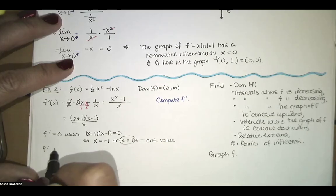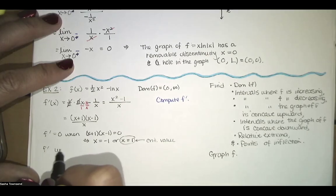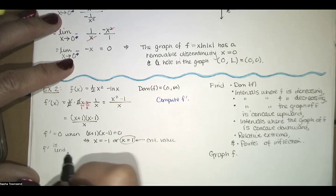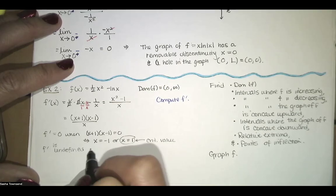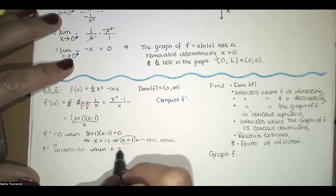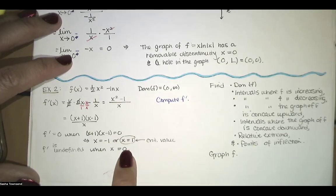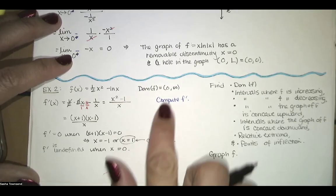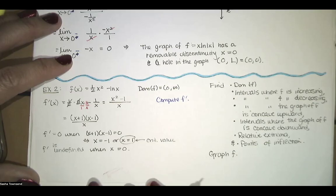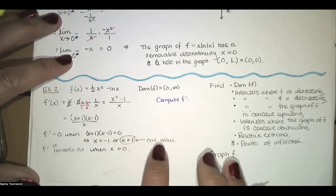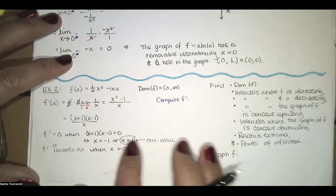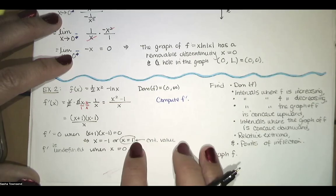f prime is undefined when the denominator is zero, which gives x equals 0. But x equals 0 is not in the domain. Remember, critical values must be in the domain, so it turns out we only have one critical value: x equals 1.